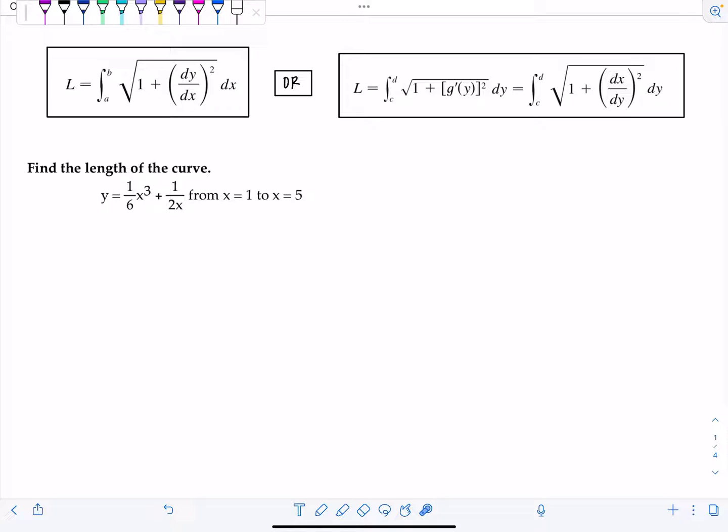First one find the length of the curve y equals one sixth x cubed plus one over two x from x equals one to x equals five. This is a classic problem where there's this little factoring slick maneuver you have to do in order to be able to integrate. And once you know it you'll be a pro anytime you see it.